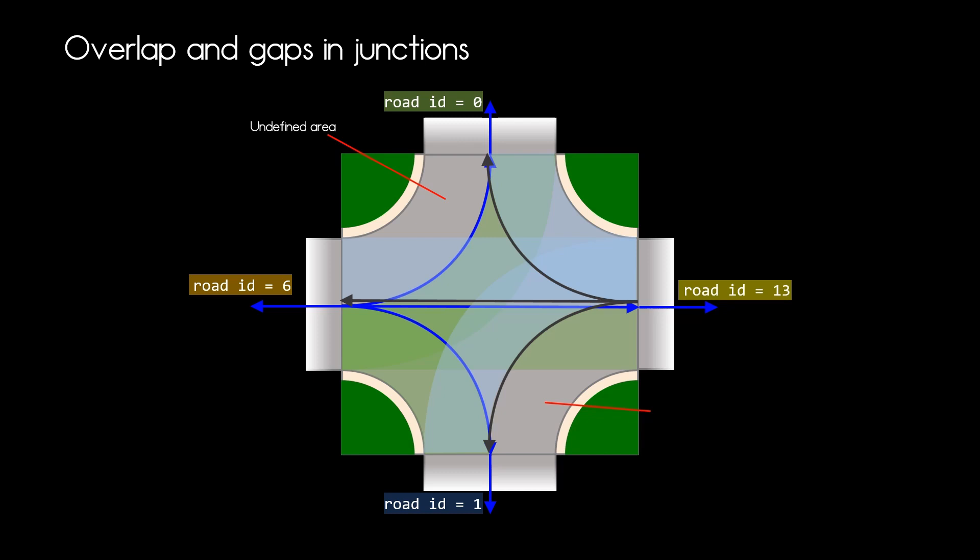Now let's add the roads from the second incoming road to the junction. Now we have a lot more overlap but we also still have gaps in our junction. In our example, the remaining connecting roads will cover this area. But it can happen in other junctions that you model that the connecting roads will not cover the entire junction area. You need to be aware that this can occur.